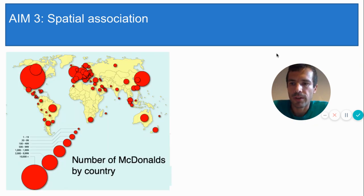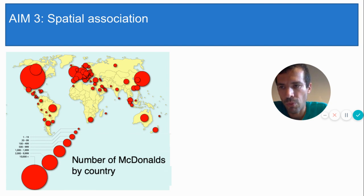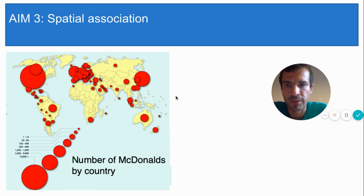In the last video you learned how thematic maps show the way that a variable is distributed in space. For example, the variable in this map here is the number of McDonald's, and by mapping this variable we can easily see where McDonald's restaurants are distributed throughout the world. Now let's say that we want to dig deeper, and instead of just knowing which countries have a lot of McDonald's, I want to know why there are lots of McDonald's in those countries, or maybe what some possible effects are of a country having so many McDonald's.